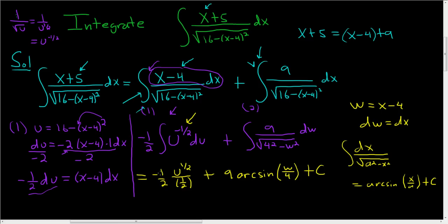And to finish, well, these cancel. So we end up with negative. We can write u to the 1 half as the square root of u. And u was all of this stuff over here, right, this huge mess. So this is 16 minus x minus 4 quantity squared plus,